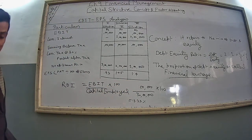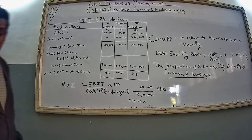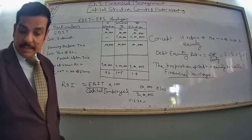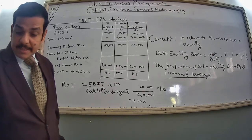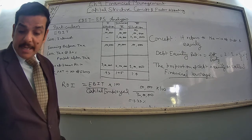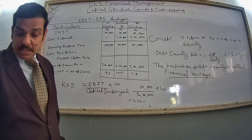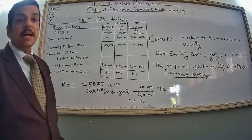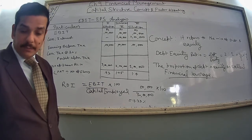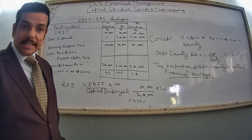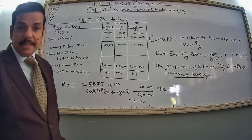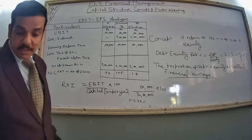Now see the second situation of EBIT analysis — a situation of unfavorable financial leverage. Company BIO Limited has total capital employed of rupees 30 lakh. Tax rate is 30%. ROI is 10% and EBIT is 2 lakh. Three situations are considered: situation 1 — no debt, only equity; situation 2 — debt of 10 lakh; situation 3 — debt of 20 lakh.